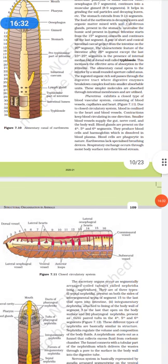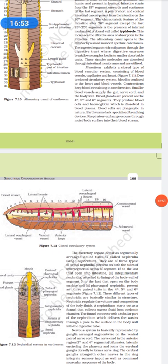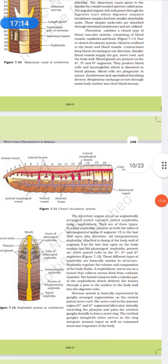Pheretima exhibits a closed type of vascular system consists of blood vessels, capillaries and heart. Due to a closed circulatory system, blood is confined to the heart and the blood vessels. Contractions keep blood circulating in one direction. Smaller blood vessels supply the gut, nerve cord and body wall. Blood glands are present on both fifth and sixth segment. They produce blood cells and hemoglobin, which is dissolved in the blood plasma. Blood cells are phagocytic in nature. Earthworms lack specialized breathing devices. Respiratory exchanges occur through moist body surface into the bloodstream.